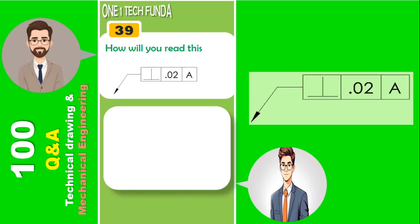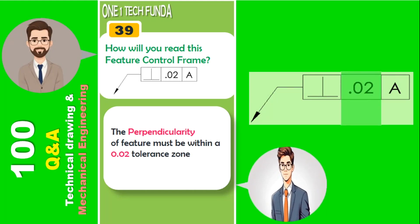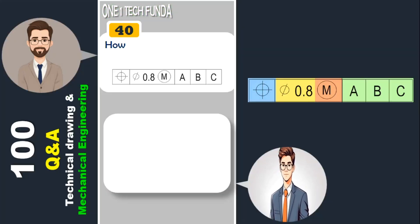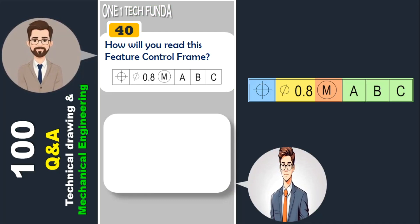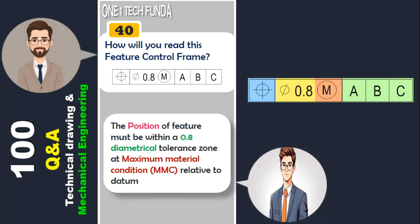Which GD&T symbols require a datum? Perpendicularity, angularity, parallelism, position, concentricity, symmetry, circular runout, and total runout require a datum feature. The perpendicularity of a feature must be within a 0.02 tolerance zone relative to datum A. The position of a feature must be within a 0.8 diametrical tolerance zone at maximum material condition (MMC) relative to datum A, B, and C.